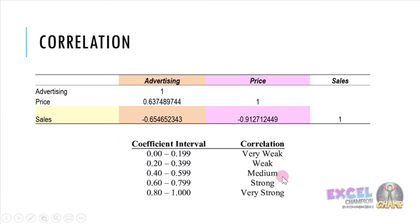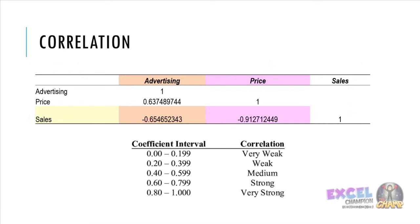Number two, correlation. This is the result for the correlation analysis. We want to see the relatedness between independent and dependent variables. For advertising and sales, the result is negative 0.65, meaning that advertising is negatively related to sales. Price is also negatively related to sales.